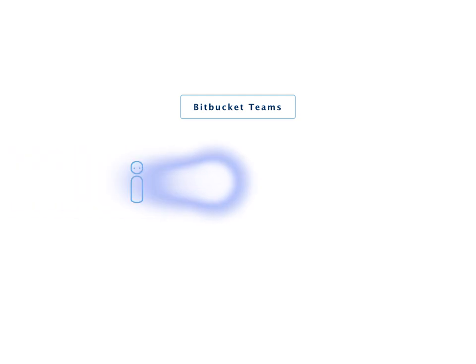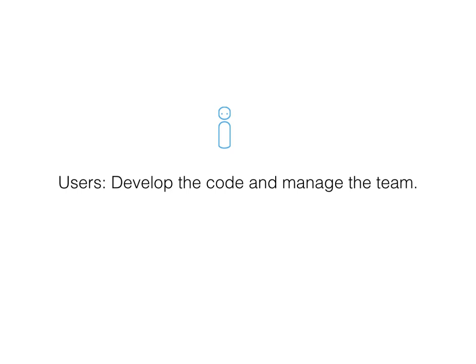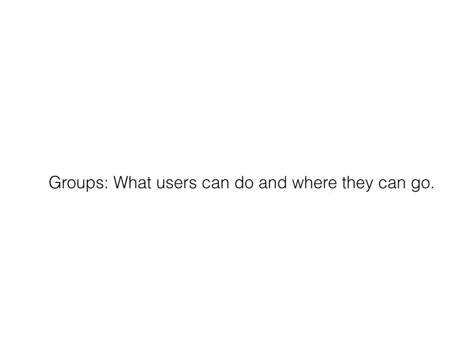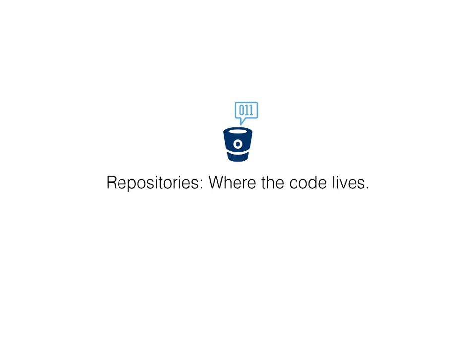Bitbucket Teams are made up of users, groups, and repositories. Users are who develop the code and manage the team. Groups are permission groups, like administrators and developers — they determine what users can do and where they can go. Repositories are the core of Bitbucket; it's where the code lives, and where you store, manage, and share code.